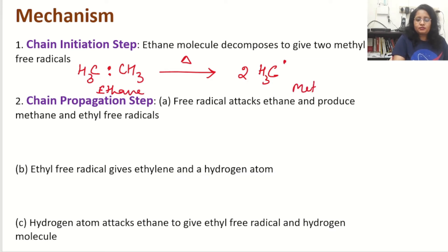Now the second step or chain propagation step has three parts. First part (a) is saying free radical attacks ethane and produces methane and ethyl free radicals. Let's have a look. The free radical that is H3C will attack ethane. Now I am going to write ethane in this way, showing the electrons so that you can understand how they are made. This is our ethane and this is methyl free radical.